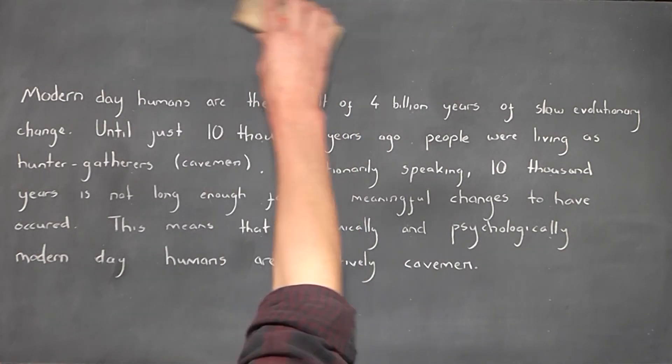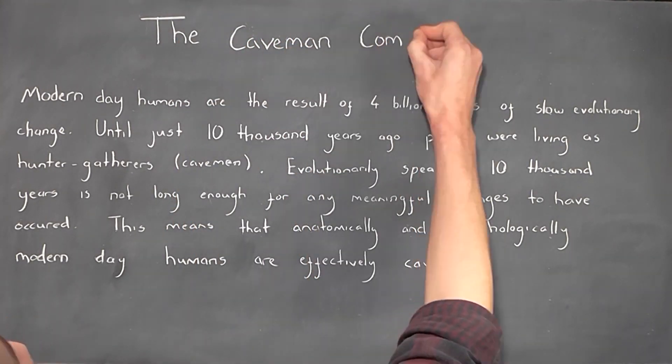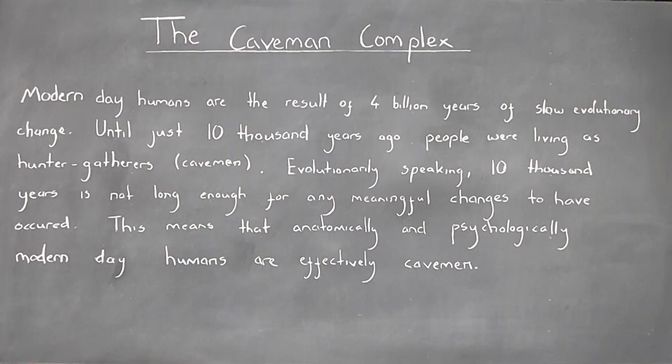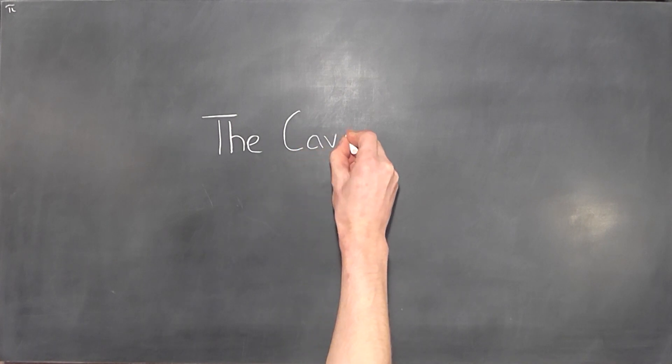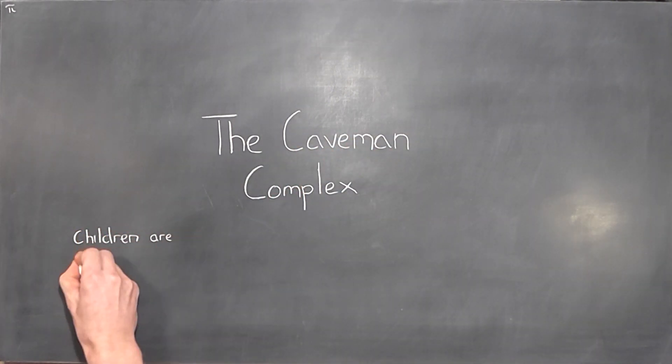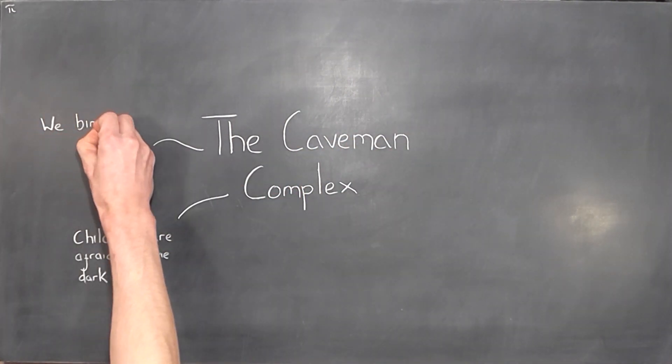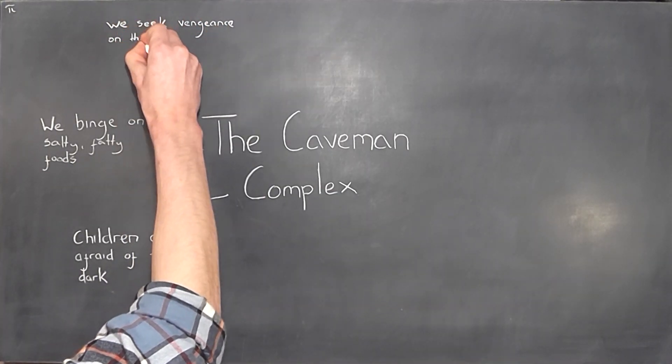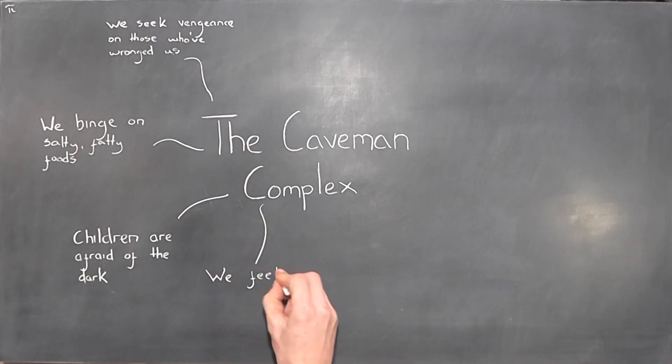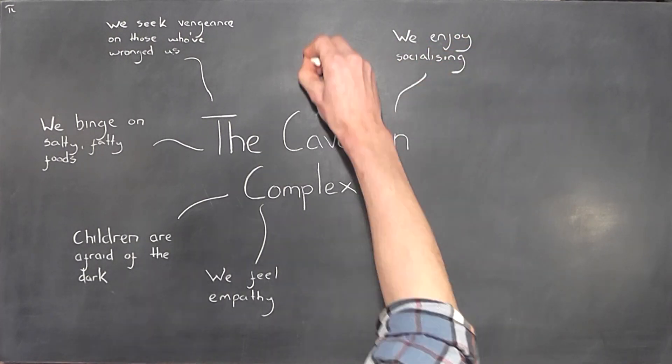I personally like to call this realization the caveman complex. The explanatory power of this realization is absolutely ridiculous. For one of many examples, it explains why children are afraid of the dark. In fact, many scientists believe this realization to be the fundamental realization, the central axiom of all psychology.